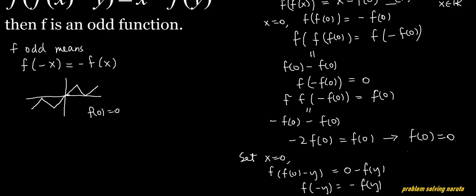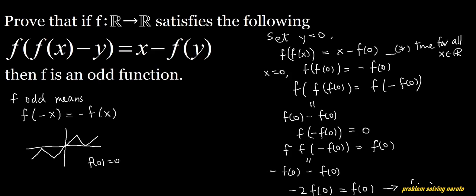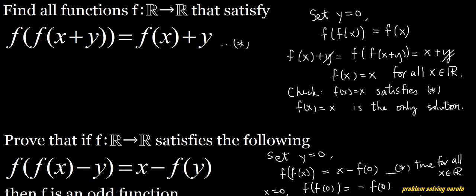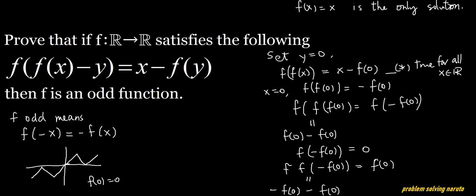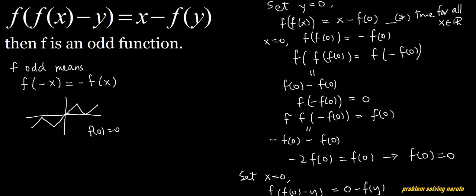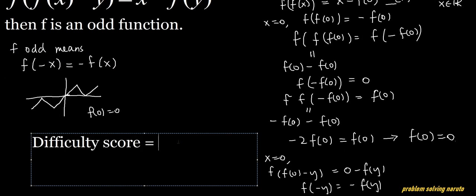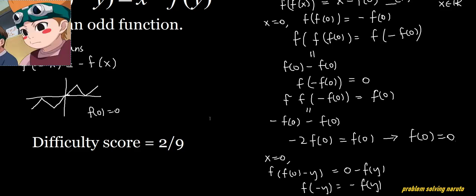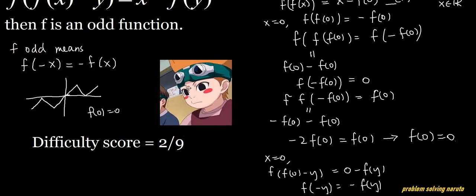The key lessons from these two problems: first, try plugging in zero to simplify things; second, make use of f(f(something)) equaling something simpler, and apply it again and again. I'd rate these problems around two out of nine in difficulty. The character is Moegi — thank you for watching!